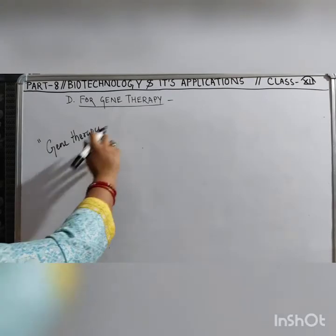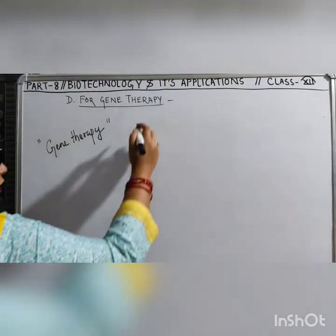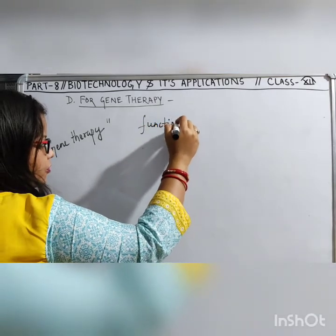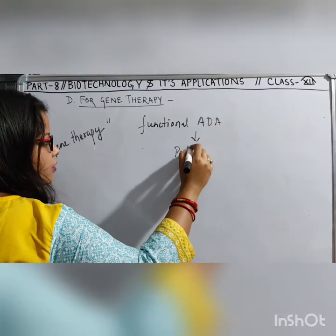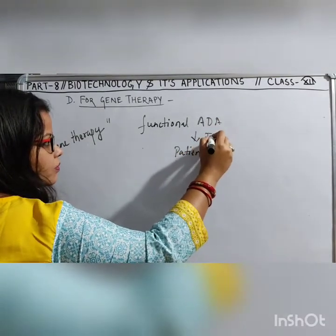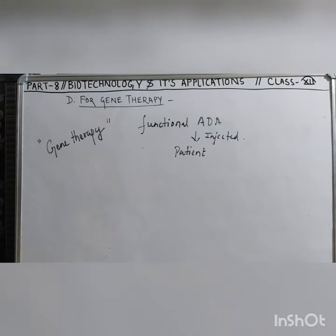In gene therapy treatment, the functional ADA enzyme is injected into the patient, which allows production of T and B lymphocytes. However, in both cases — enzyme injection and bone marrow transplant — continuous treatment is required. This enzyme needs to be injected whenever the patient requires it, making it a continuous process.